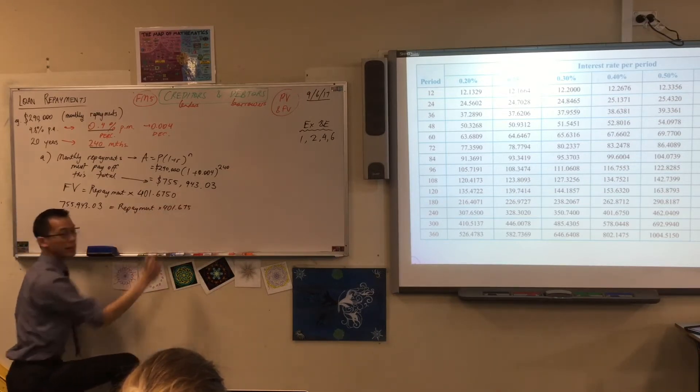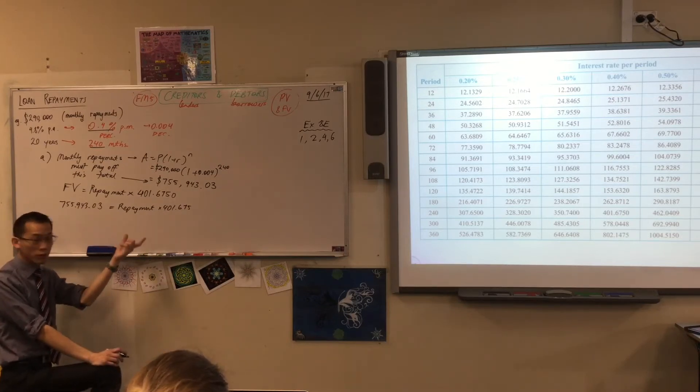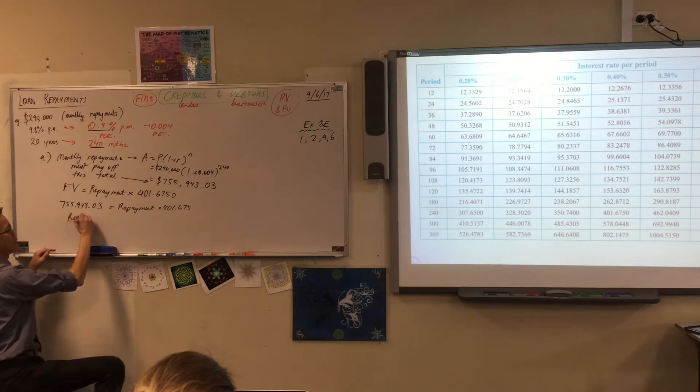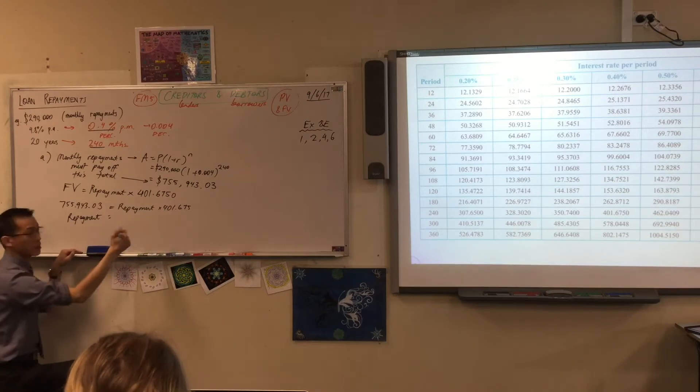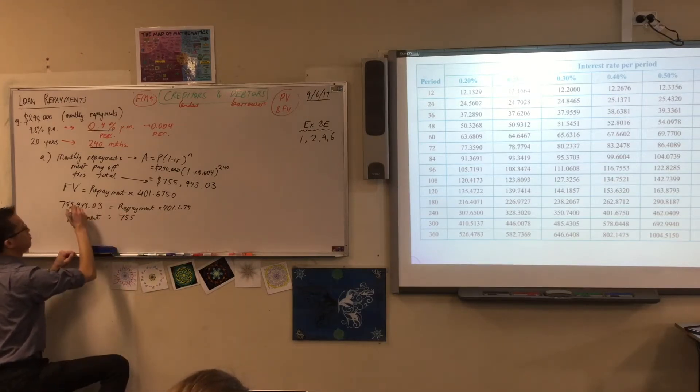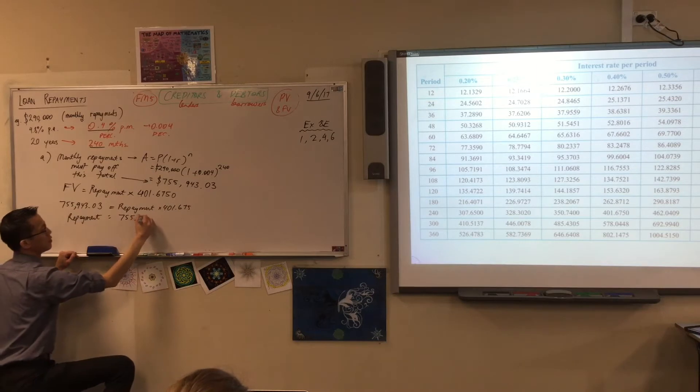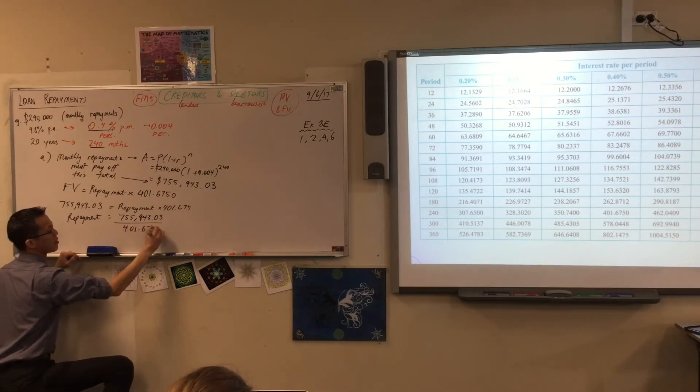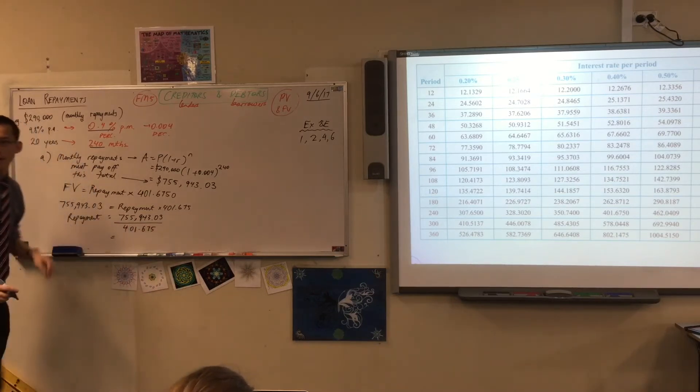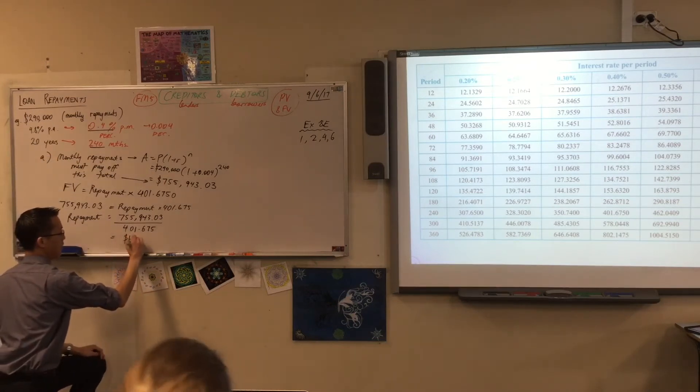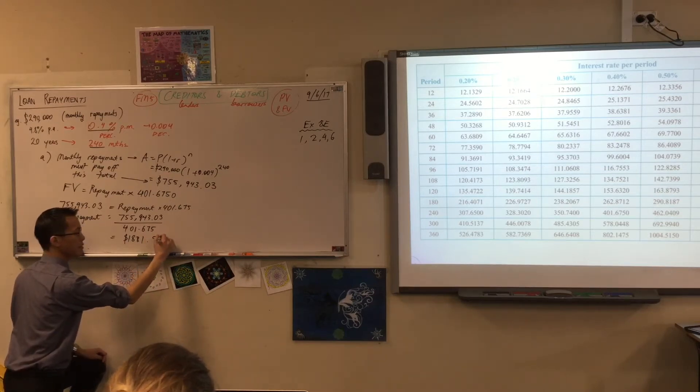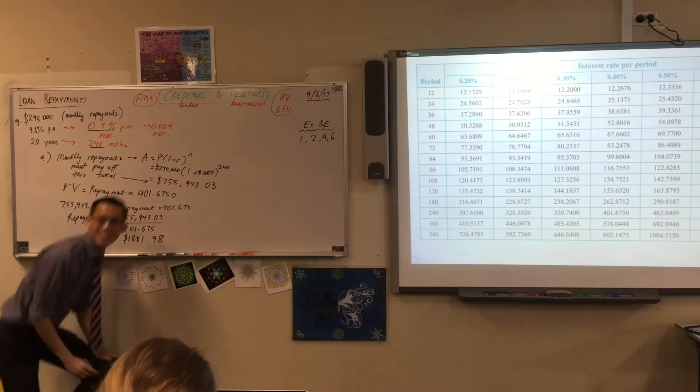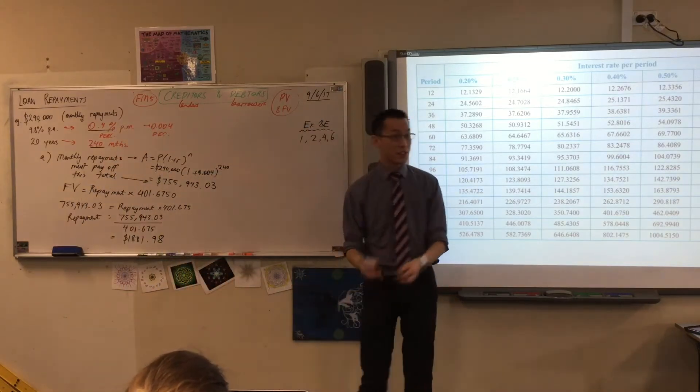So, therefore, if what I'm trying to do is make the repayment the subject, solve for the repayment, what must I do to both sides? Divide by that number. I'm going to divide by 401.675. That's a comma. Equals. Okay, what do you got? 1,881. Yeah.